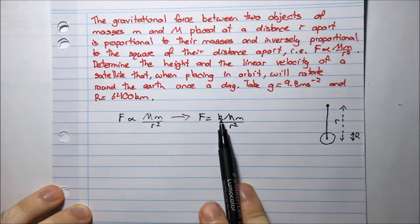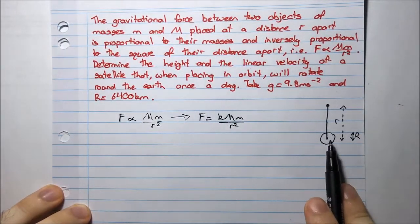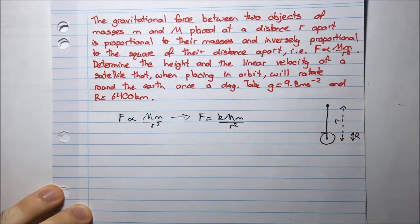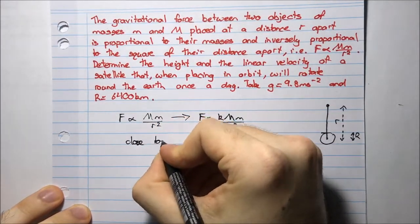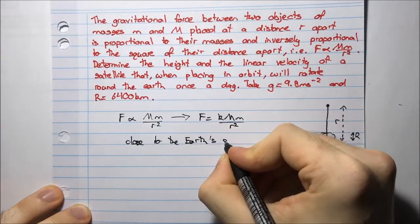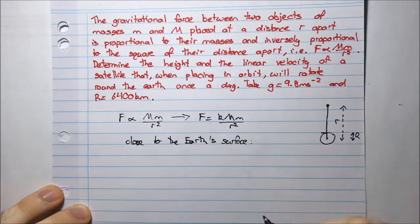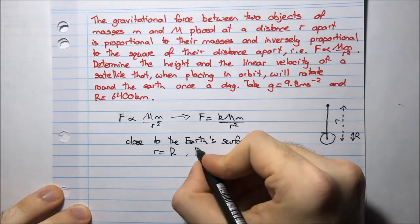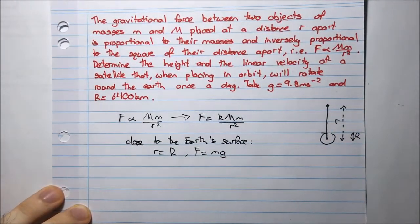I want to somehow eliminate some of these variables. What do I know? I know that at the earth's surface, or very close to the earth's surface, the radius is equal to r, but the force is equal to mg, mass times gravitational acceleration.